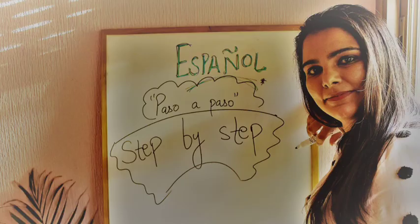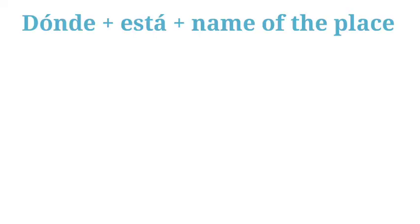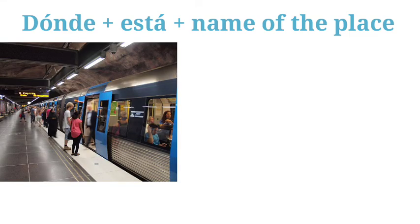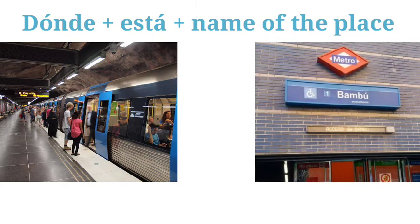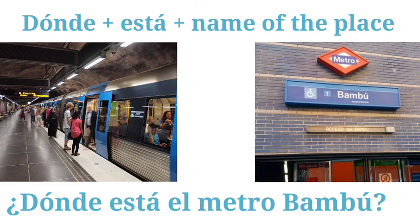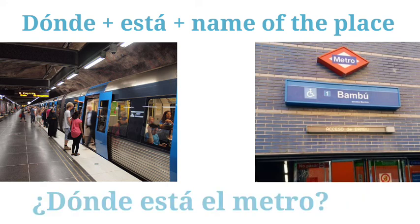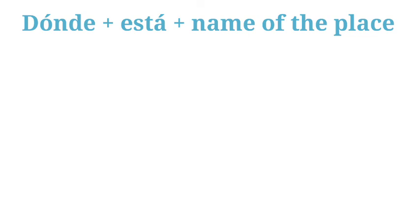By the way, if you want to learn from scratch, check out the other series I'm uploading in parallel called 'Español Paso a Paso,' where we do things step by step. Now back to 'dónde' — if you want to ask about the nearest metro station, for example metro Bamboo, you would say 'dónde está el metro Bamboo,' meaning 'where is metro Bamboo?' If you say 'dónde está el metro,' it means the nearest metro station.